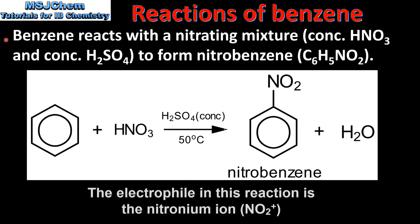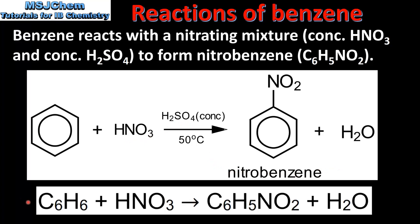Benzene also reacts with a nitrating mixture, which is a mixture of concentrated nitric acid and concentrated sulfuric acid, to form nitrobenzene. Here we have the reaction of benzene with concentrated nitric acid and concentrated sulfuric acid to produce nitrobenzene and water. And here we have the overall equation for the reaction.